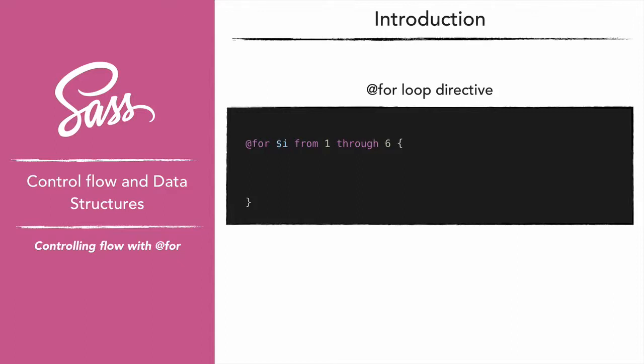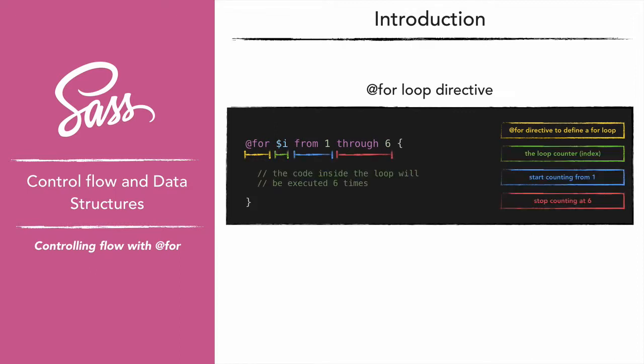We have here another control flow statement: the @for directive. By using this directive we'll be able to execute code repeatedly following a counter. Let's dig first into how to write a for loop, then we'll go through a real use case example.